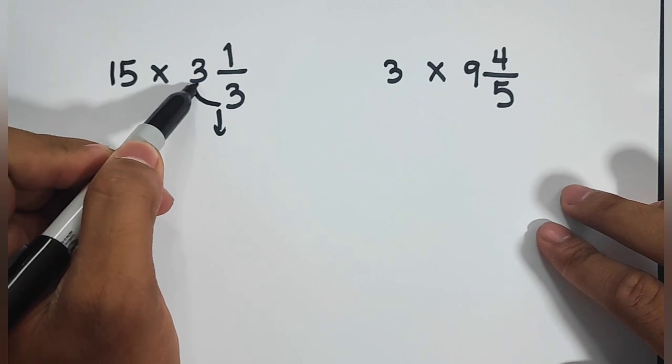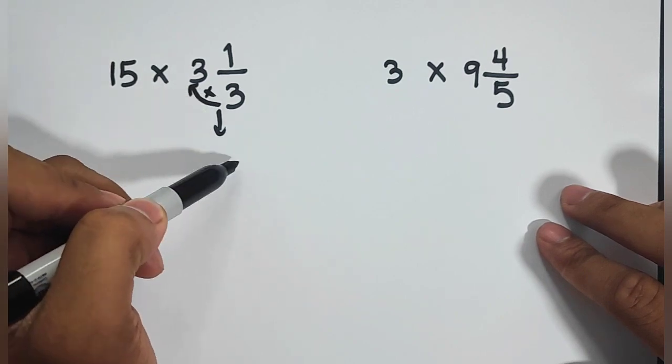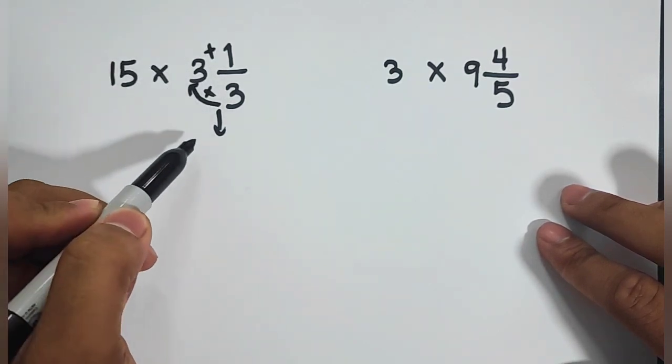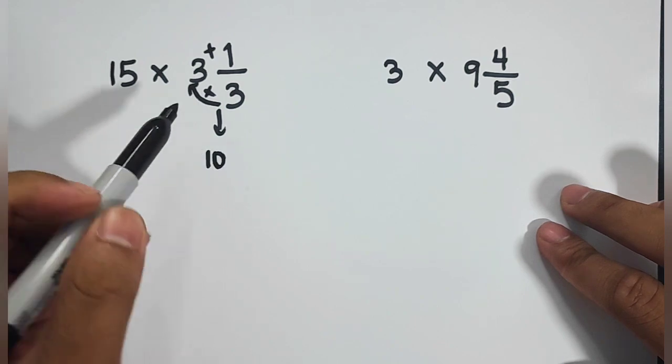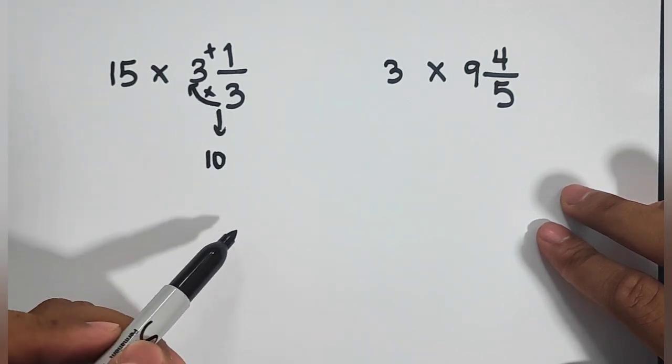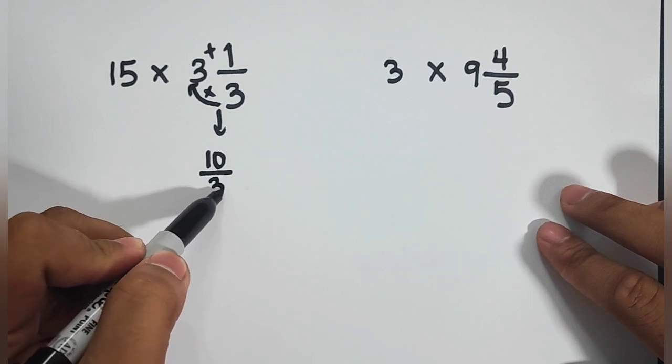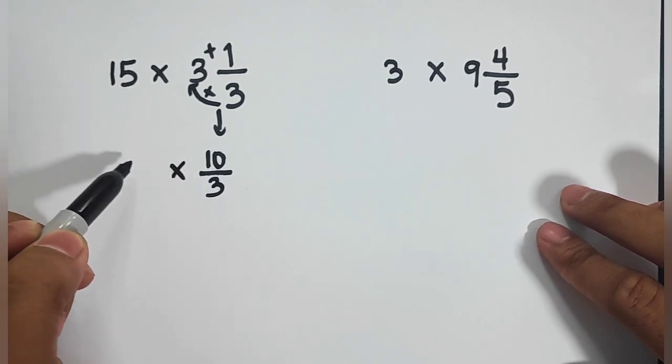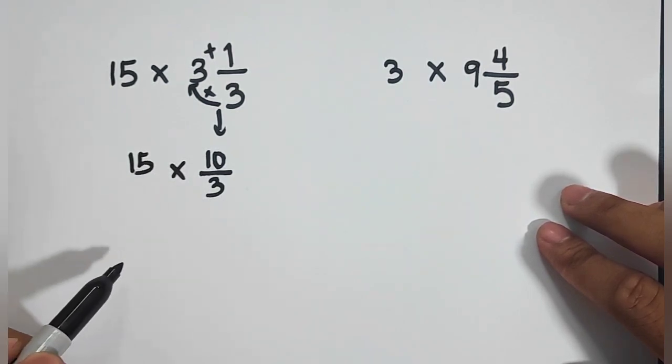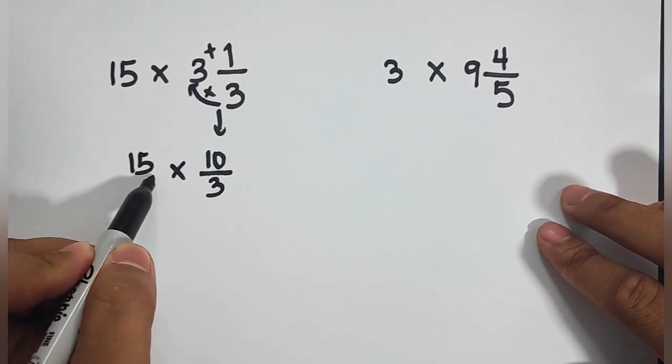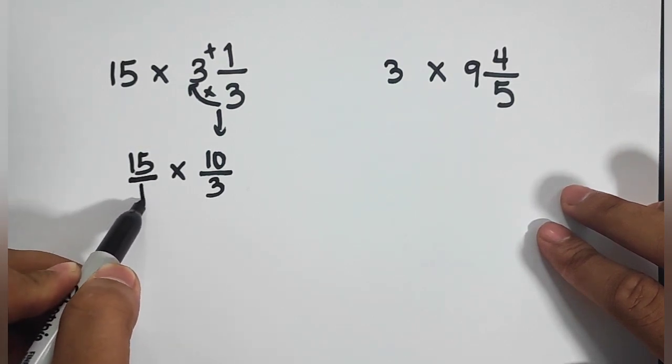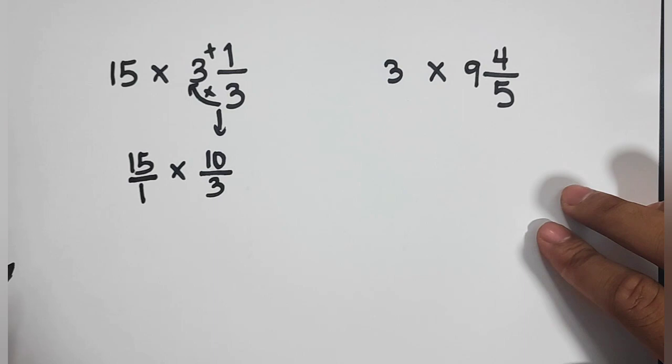So let's repeat our process. 3 times 3 is equal to 9 plus 1 that would give us the answer of 10. Then copy your original denominator which is 3. So this would be 10 over 3 times 15. Now, we will express 15 into a whole number, into a fraction rather, by putting 1 in the denominator.